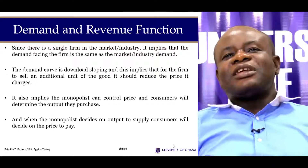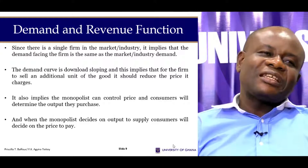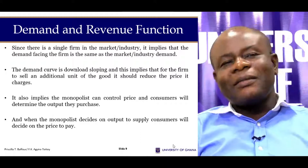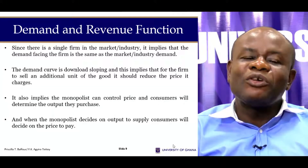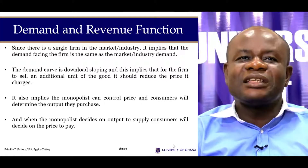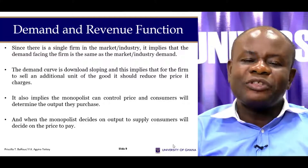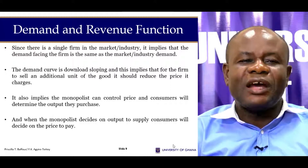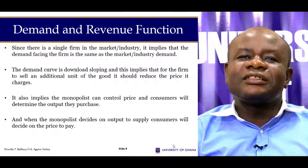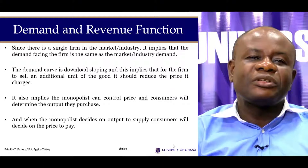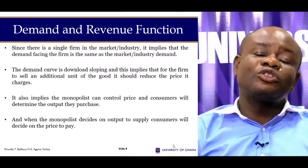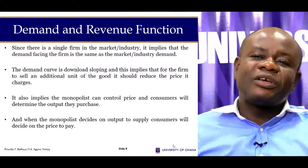The demand for the monopolist is the same as market demand. The monopoly demand curve is downward sloping, unlike the perfectly competitive firm's demand. This means that for every additional unit the monopolist wants to sell, it must reduce the price. It implies the monopolist has control over price — when the monopolist sets a price, consumers determine the quantity they purchase, and when the monopolist sets the quantity, consumers determine the price they are willing to pay.